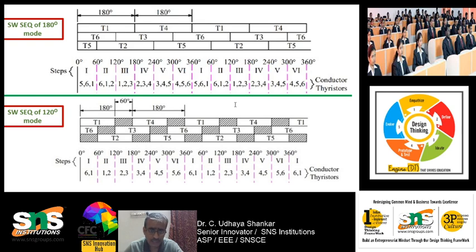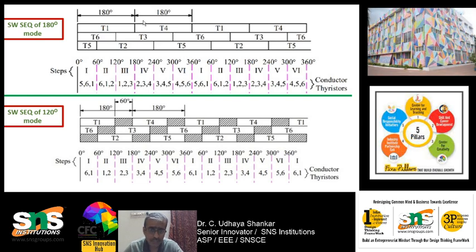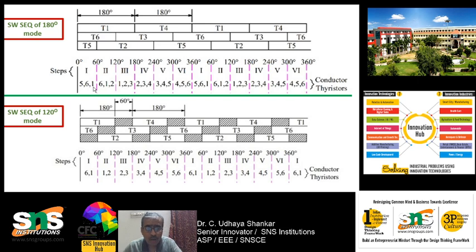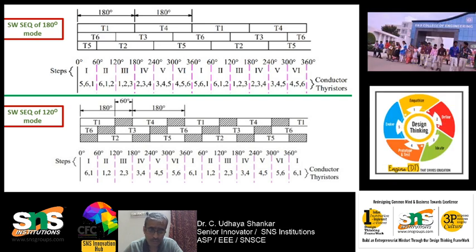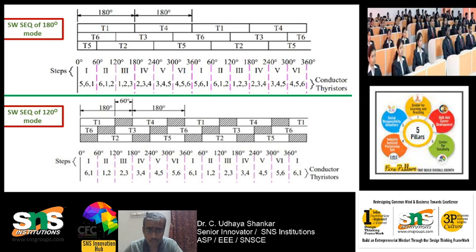The phase shift between each transistor is 60 degrees, so every 60 degrees one switching device goes out and another comes in. From the table you can also observe that at each instant either two upper transistors and one lower transistor are on, or one upper transistor and two lower transistors are on. There is no case where all three upper transistors are on or all three lower transistors are on simultaneously. Either way, exactly three transistors are on at any instant.